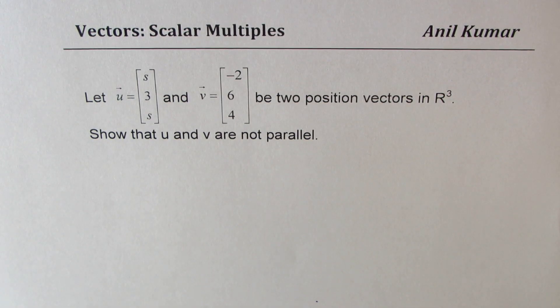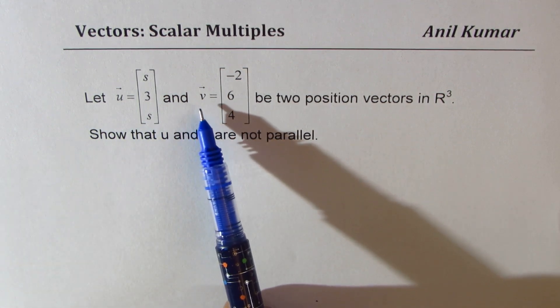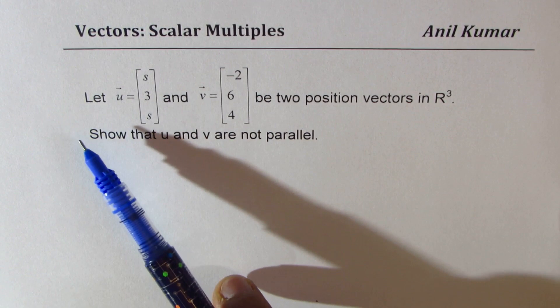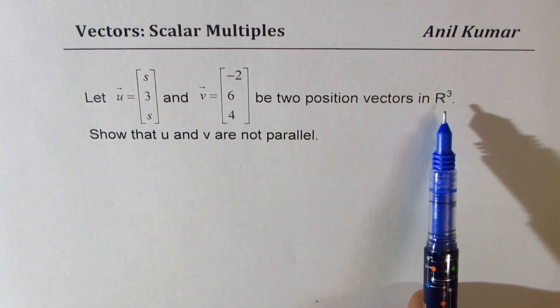I'm Anil Kumar sharing with you a question from my subscriber Brian. The question is let the vector u be s, 3, s and vector v be minus 2, 6, 4. Let these two be two position vectors in R³.